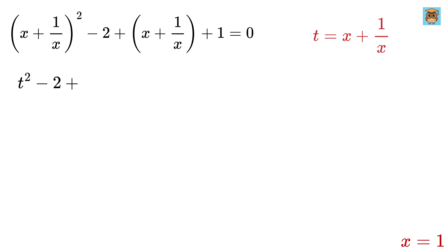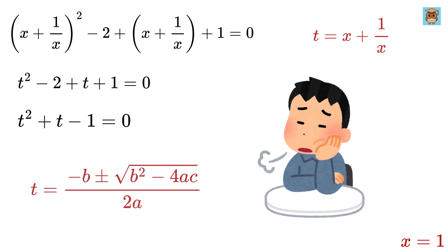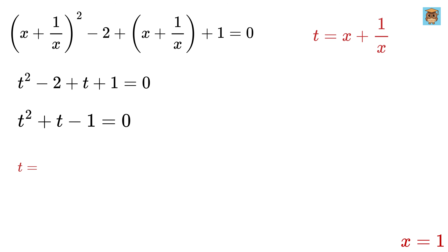So we have t² minus 2 plus t plus 1 equals 0, or t² + t minus 1 equals 0. Solving this quadratic using the quadratic formula gives t equals (minus 1 plus √5) / 2 and t equals (minus 1 minus √5) / 2.